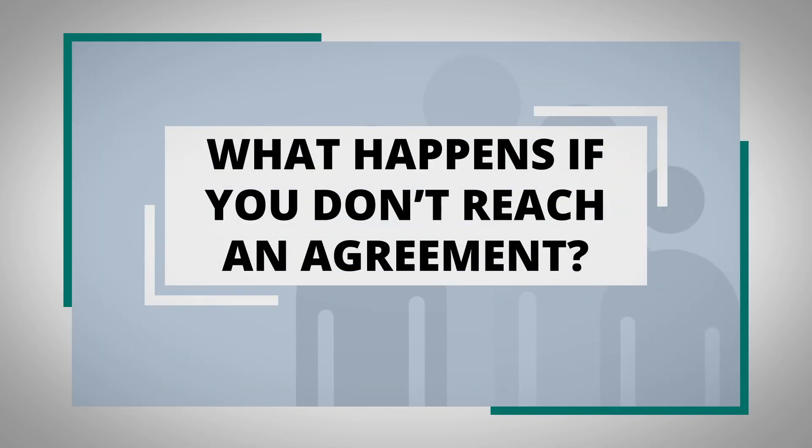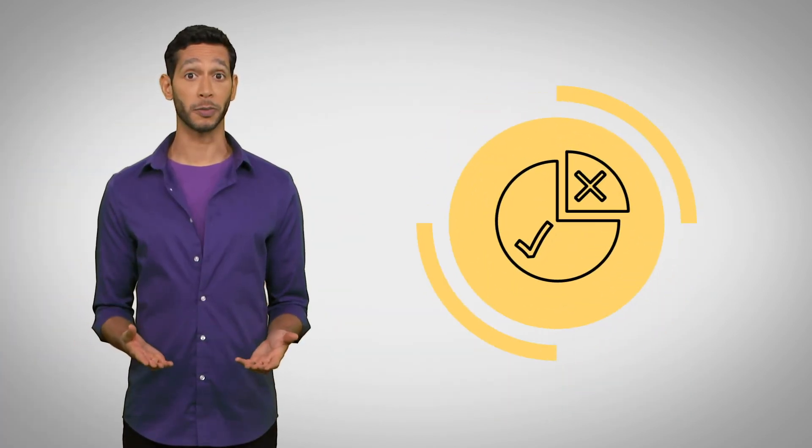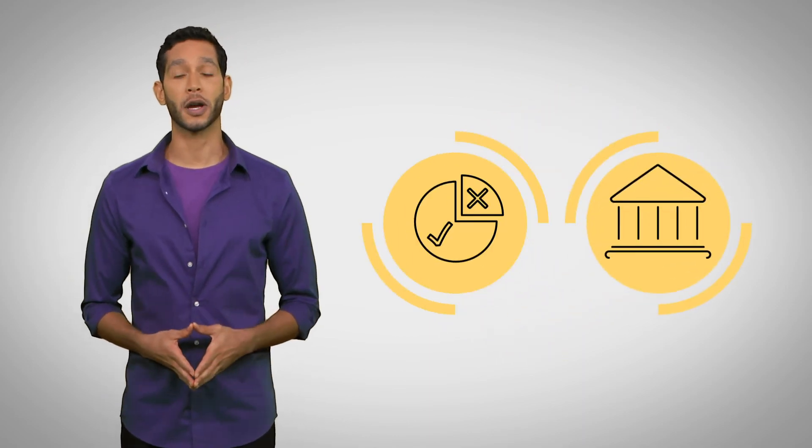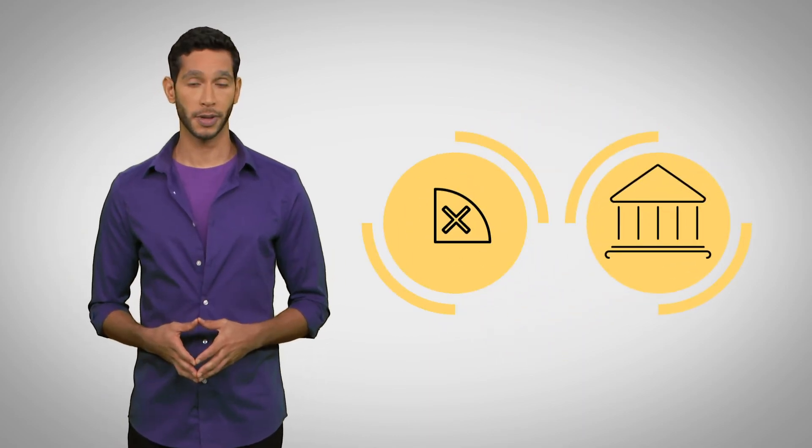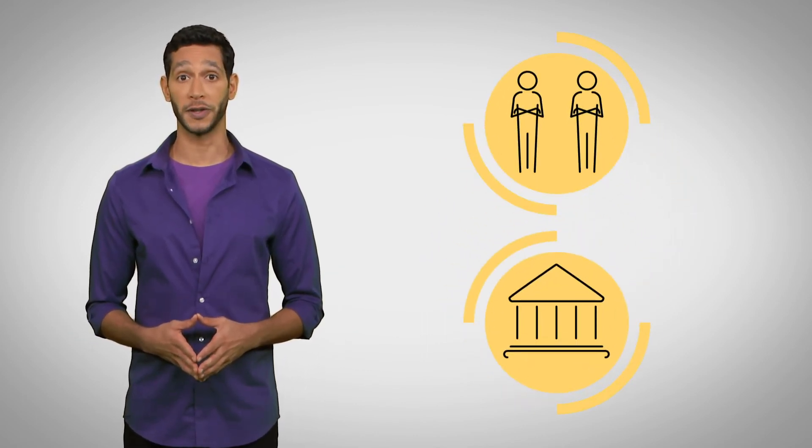But what happens if you don't reach an agreement? Maybe you are able to reach an agreement on some issues but not all. That's okay. The court can focus on just the unresolved issues. Sometimes people can't agree on anything. That happens and it's okay. The court is there to help resolve disputes.